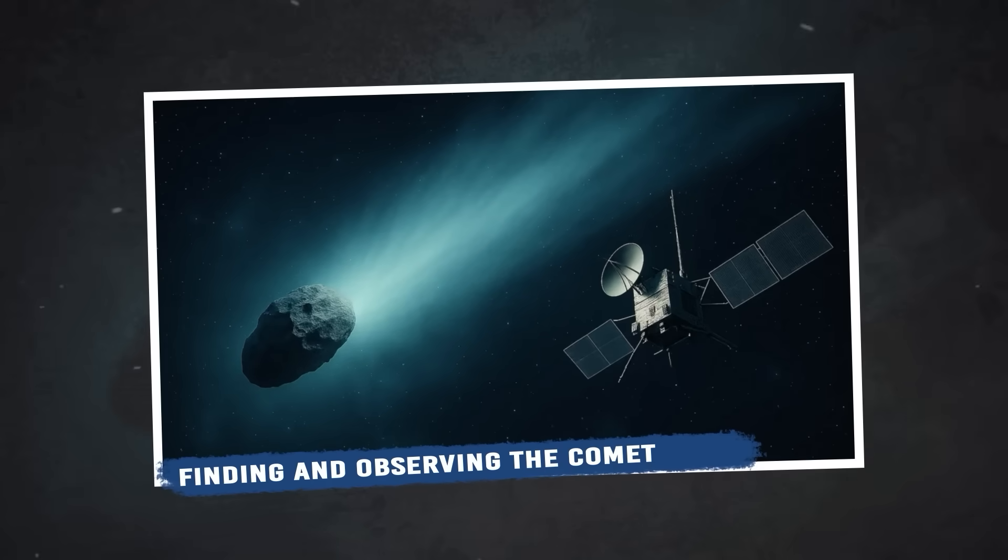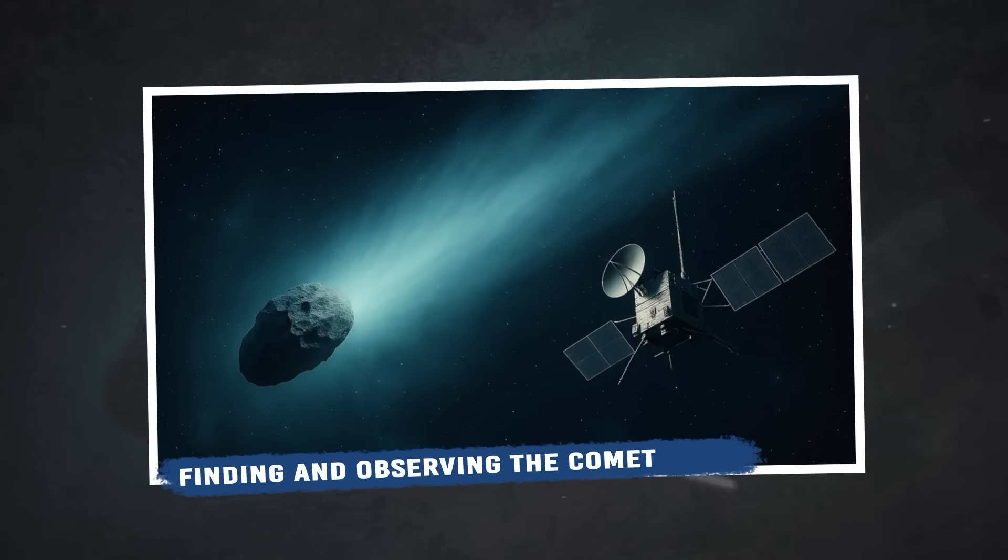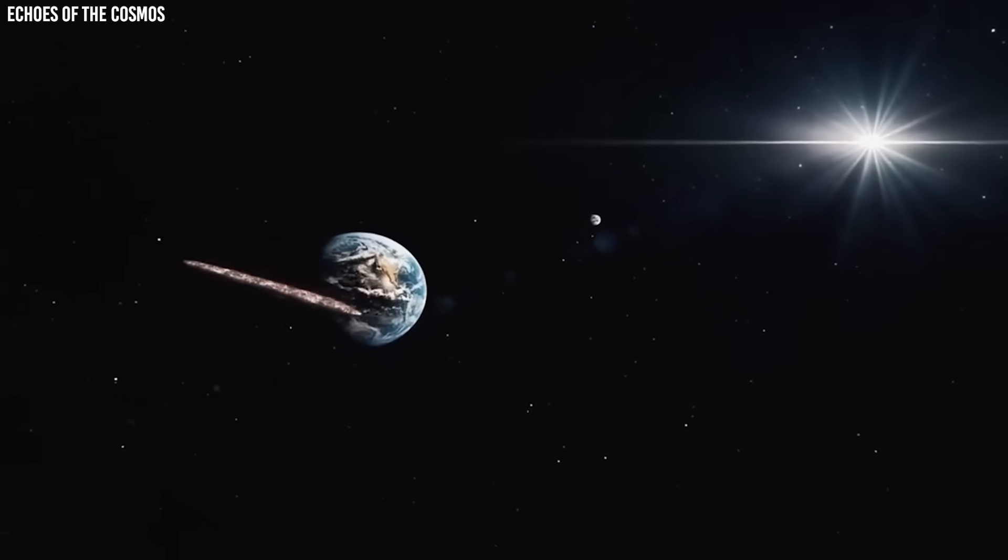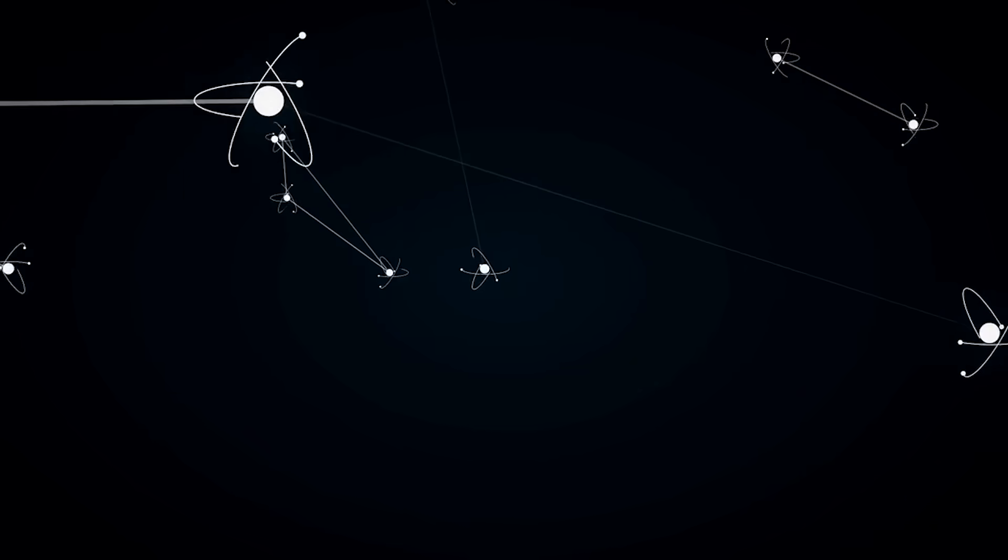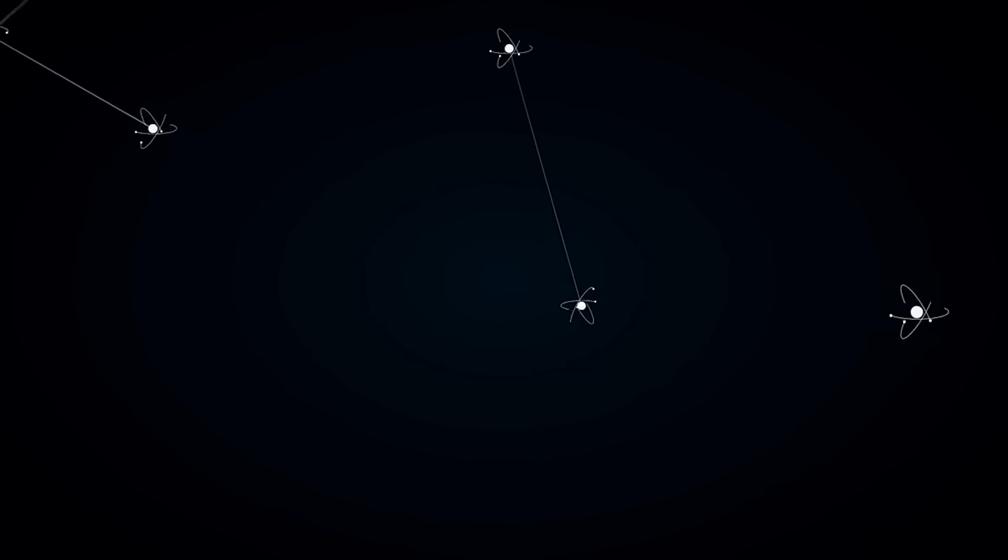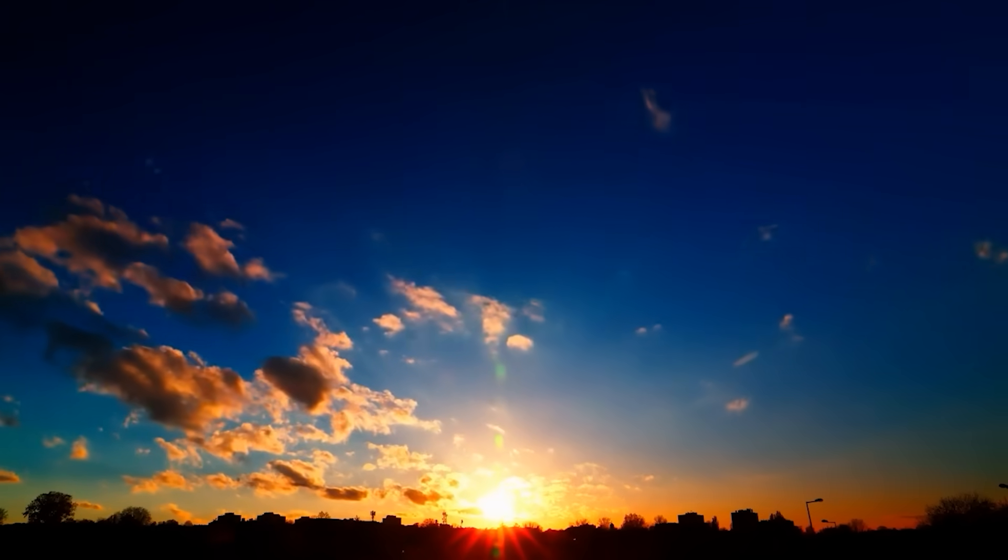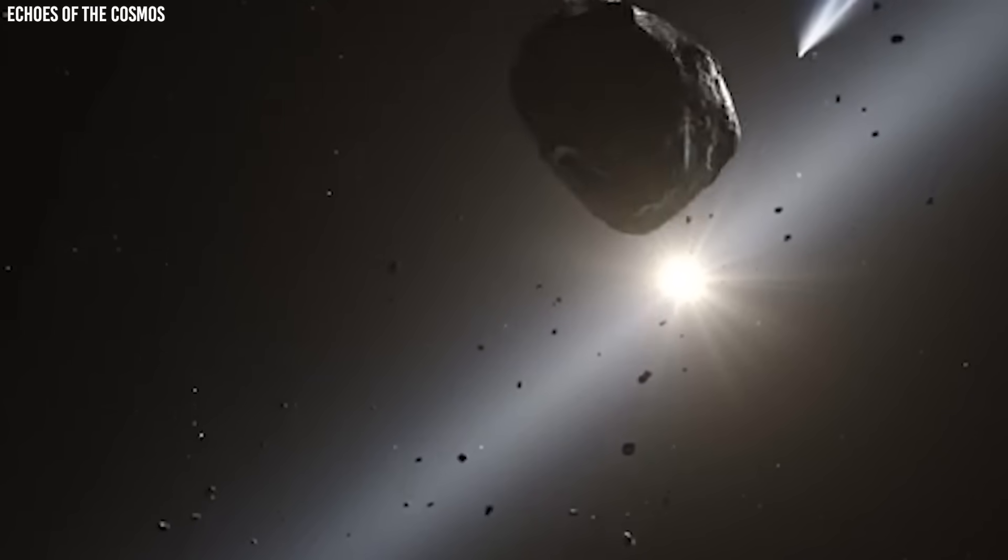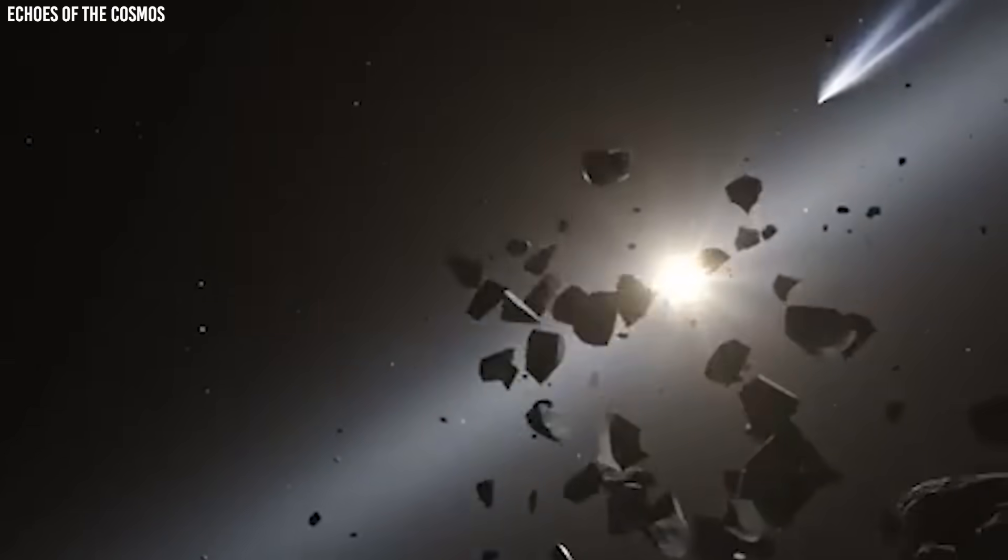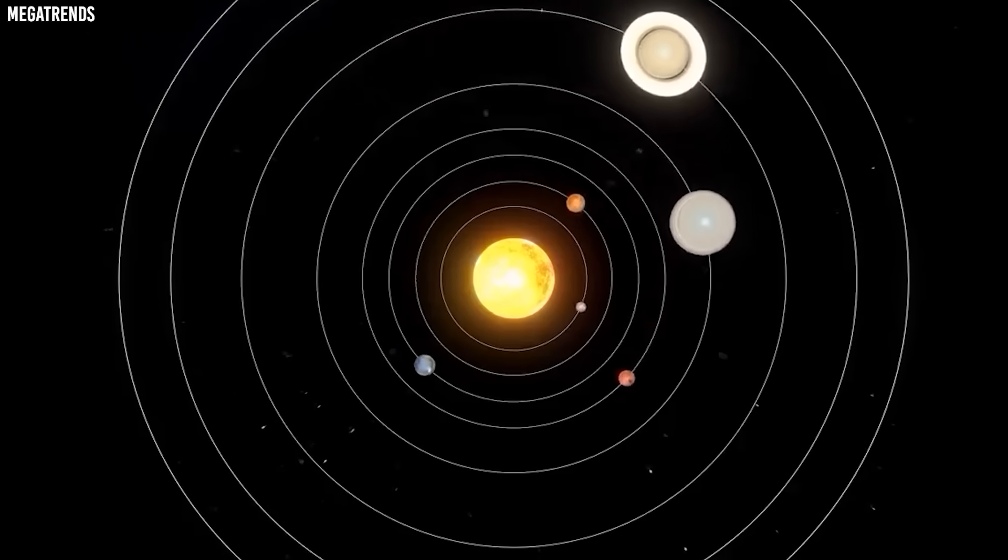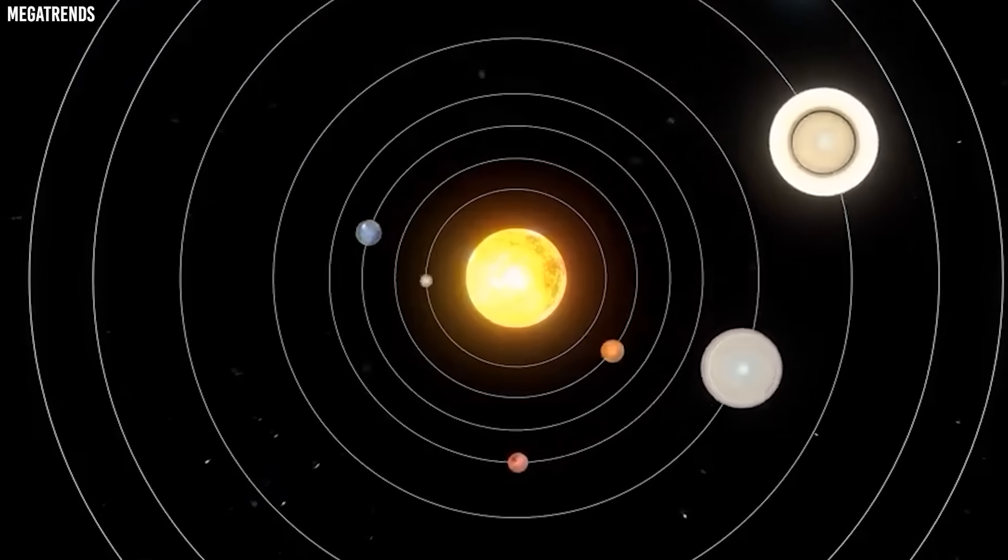Finding and observing the comet. If you want to see SWAN for yourself, now is the time to start looking. The comet is currently in the constellation Virgo, very close to the bright star Spica. In mid to late September, you'll want to look toward the west after sunset. The comet will be fairly low in the sky, so you'll need a clear view toward the horizon. The best time to look is about an hour after sunset, when the sky has darkened enough to see faint objects but SWAN is still above the horizon.